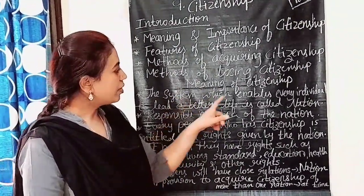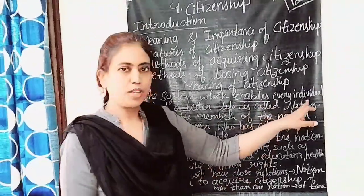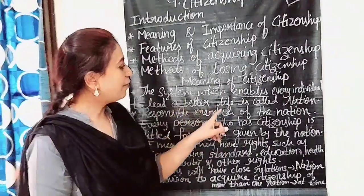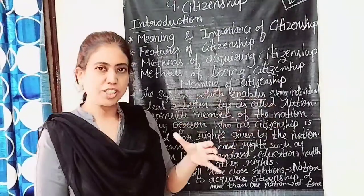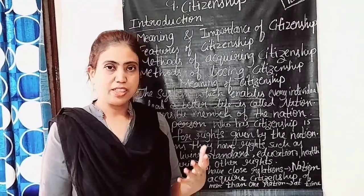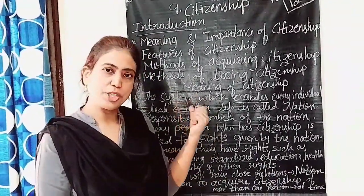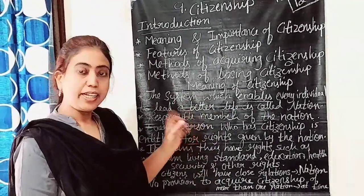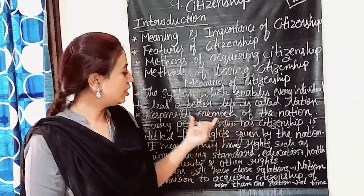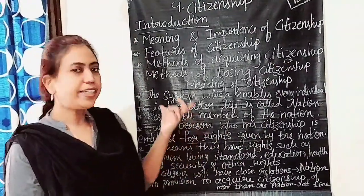The system which enables every individual to lead a better life is called a nation. That system is called citizenship. Citizens are also responsible members of the nation.